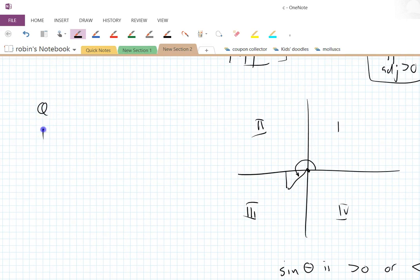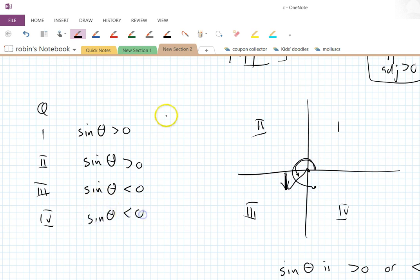So we've got quadrant one, two, three, and four. Here we know that sine theta is positive. For quadrant two, sine theta is positive. For quadrant three, we've come down, so the opposite is negative because we've fallen down. So that tells me that sine theta is less than zero. And for quadrant four, it's just the same, we've just gone a bit further. Sine theta is also less than zero.